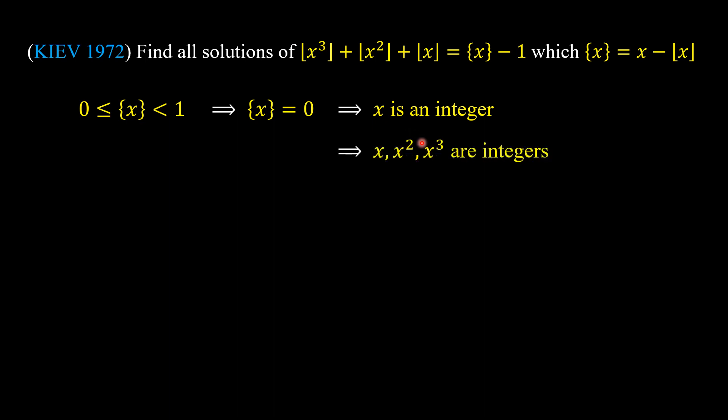So we have x, x², and x³ are integers, so the equation on the problem can be rewritten as x³ + x² + x = -1.